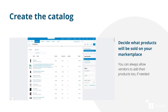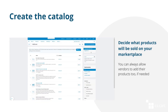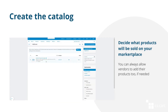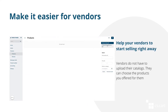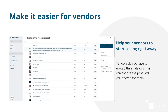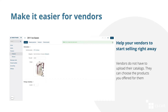Vendors will not be able to upload their own products unless you allow them to. You can always turn on the corresponding setting in the admin settings. You can make the start of your vendors easier and faster — with the common products, all the vendors have to do is choose the products they have on sale, specify their own price if needed, and start selling.